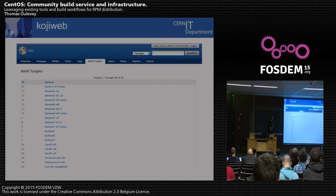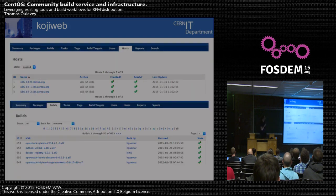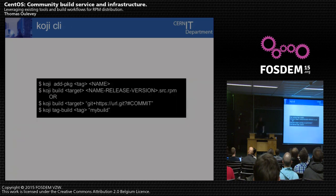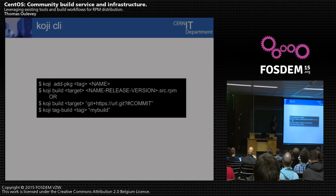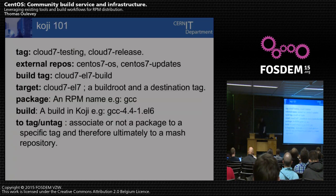This is the main web interface. It shows you what kind of build targets we have for CentOS. You have a host tab as well, so you can see all the builders that are ready, enabled, or not. And if you want to see what builds have been done recently, you can go to the build tab. For the CLI, if you need to build a package, it will be around three commands, but you need to know a bit about Koji naming for different actions.